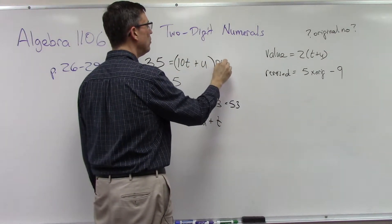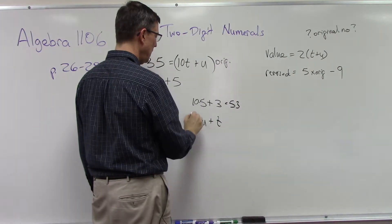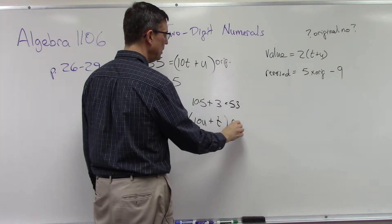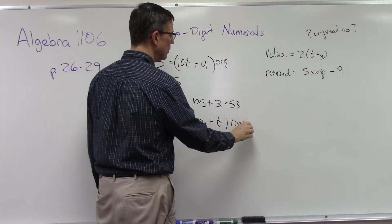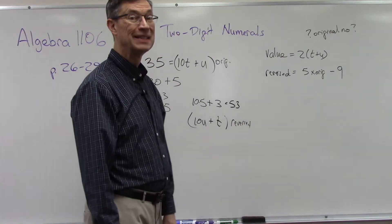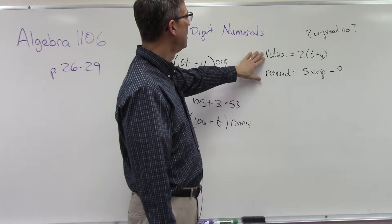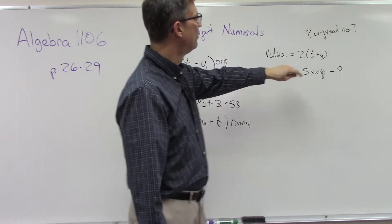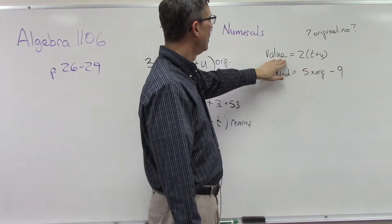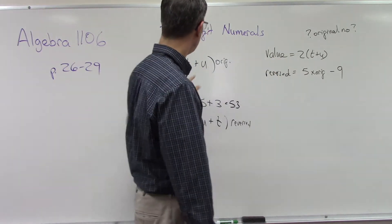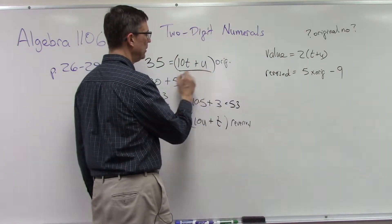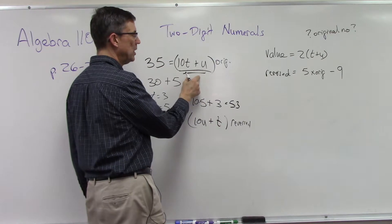Okay, so this formula here is the original number, and this is the formula for when the digits are reversed. Then they'll do problems like this: Well, let's say the value of the number was twice the sum of the digits.